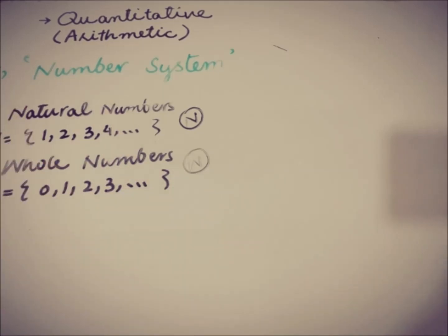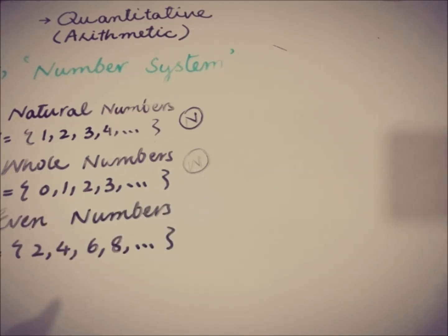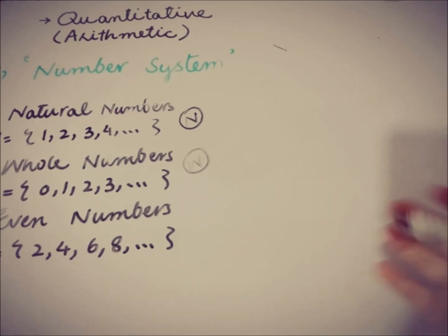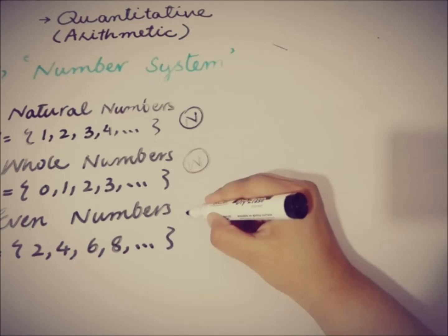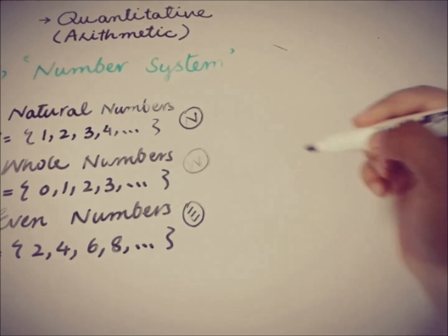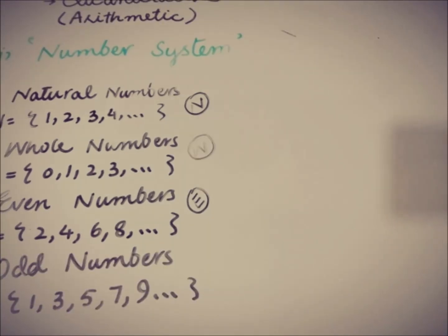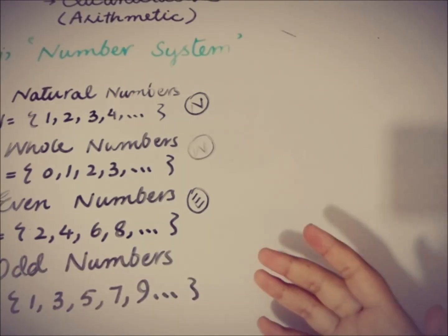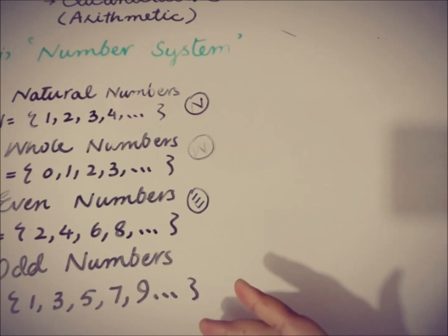Now moving towards even numbers — numbers that are divisible by 2, or multiples of 2, are known as even numbers: 2, 4, 6, 8, 10, 12, etc., represented with the letter E. Similarly, numbers which are not divisible by 2 are called odd numbers: 1, 3, 5, 7, 9, and so on.